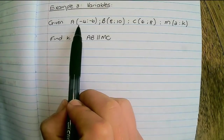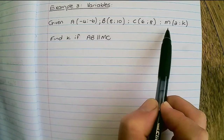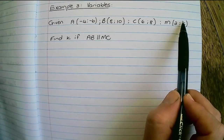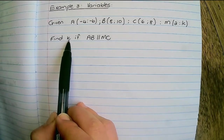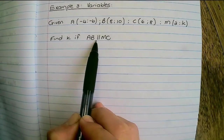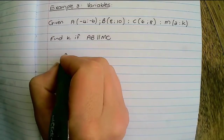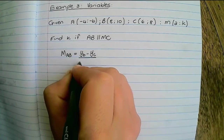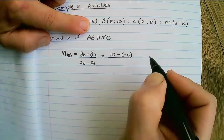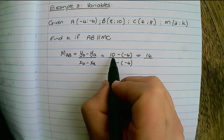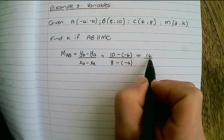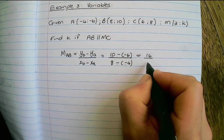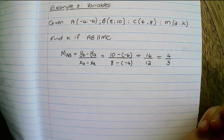In this example we are given the coordinates of A, B, C, and M, but notice M has a y-coordinate that is k, and we want to find the value of k if AB is parallel to MC. First, we're going to find the gradient of AB. Simplifying: 10 minus negative 6 becomes 16, and 8 subtracting negative 4 becomes positive 12, which simplifies to 4 over 3.